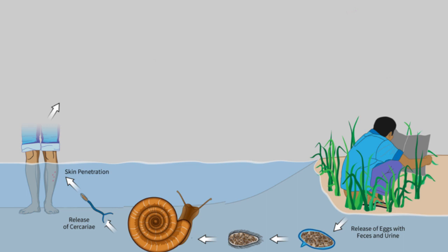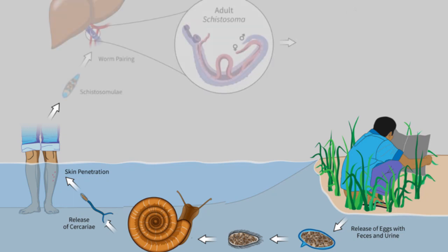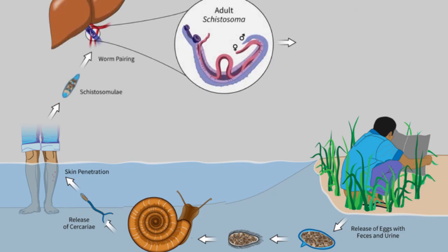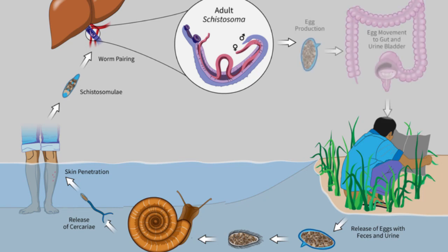Within several weeks, parasites mature into adult worms, residing in the blood vessels of the body where the females produce eggs. Some of the eggs travel to the blood or intestine, and are passed into the urine or stool.